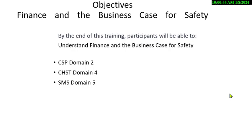We don't take an actual BCSP question. We take the concept and make a question around that concept. We're going to cover finance, which is the math part, and the business case for safety — just a small part of it. It's going to be in CSP domain 2, CHST domain 4, and SMS domain 5.